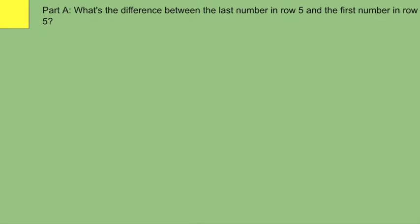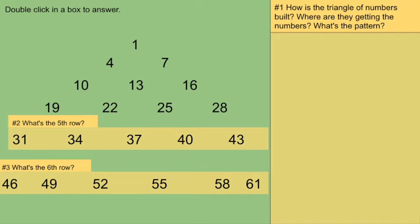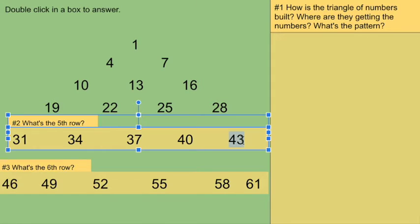Medium question. What's the difference between the last number in row 5 and the first number in row 5? Well, here's row 5. The last number is 43. The first number is 31.